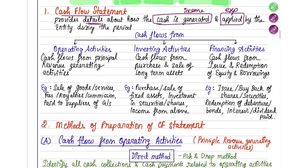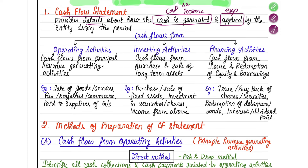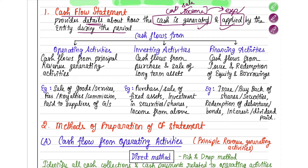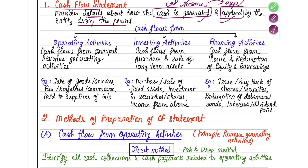Today you may have earned a cash income or made a cash sale — this statement tells you where and how you have applied that income. It contains both incomes and expenses of the entity during the period. The cash flow statement is bifurcated into three activities for better understanding: first is operating activity, then investing activity, then financing activity.